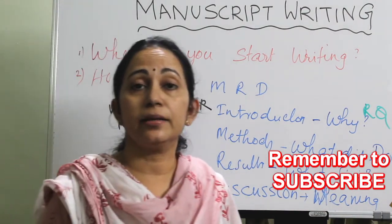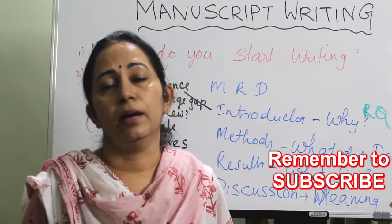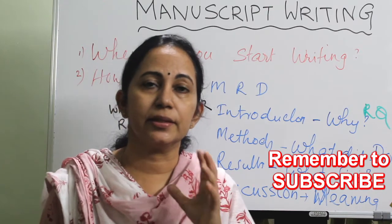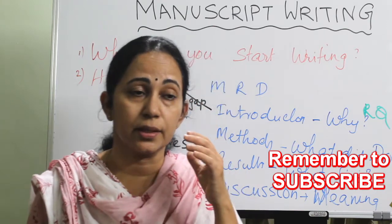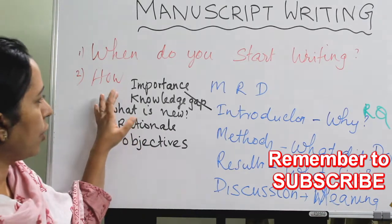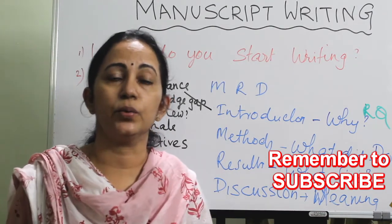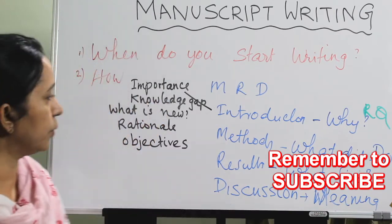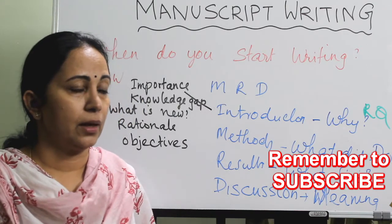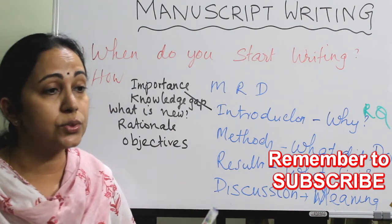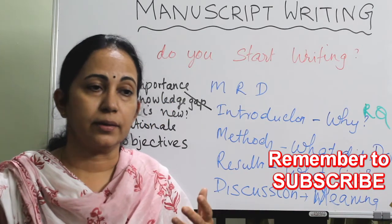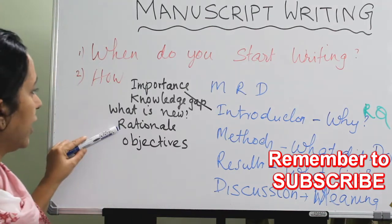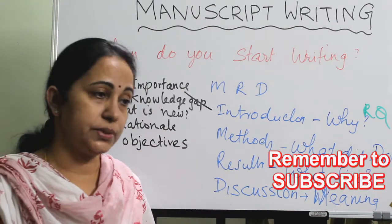For the introduction: while starting to read an article, the reader's mind will be flying in many directions. The introduction should attract the reader into the topic. Always write the importance of your research — why you started doing it — and the knowledge gap: what is known and what is unknown. Then state what is new in your study. You are indirectly telling the community why your paper is worth accepting. Also include the rationale and objectives.